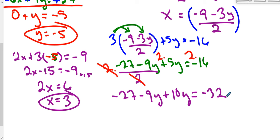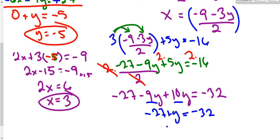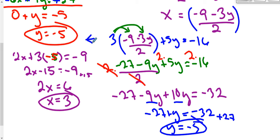Now I can go ahead and solve for y — no more fractions or common denominators to worry about. Combining like terms: positive 10y minus 9y gives me y. And negative 27 plus 27 on the left side — adding 27 to both sides — gives negative 32 plus 27 equals negative 5. So y equals negative 5, the same y value I found with elimination. When I plug that back in, I will find the exact same x value.